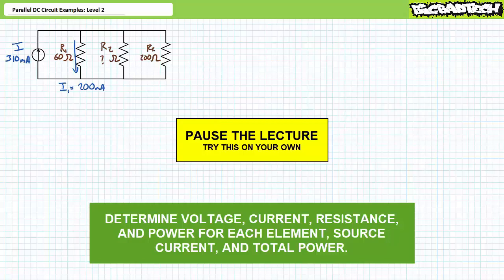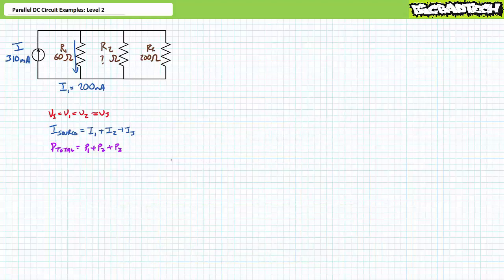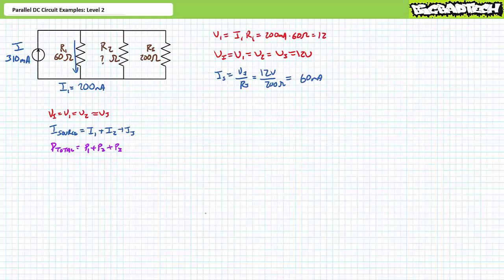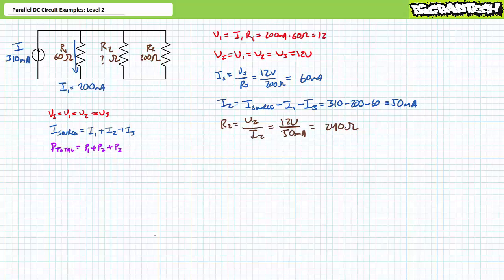Voltage across elements in parallel is the same: the voltage induced by the current source equals V1 equals V2 equals V3. KCL: source current splits into three paths, so I_source equals I1 plus I2 plus I3. The voltage drop across R1 equals current through it times its resistance, yielding V1 equals 12 volts, so all voltages equal 12 volts. I3 equals the voltage across it divided by its resistance, yielding 60 milliamps. Solving for I2 via KCL gives the remaining 50 milliamps. R2 equals V2 divided by I2, yielding 240 ohms.